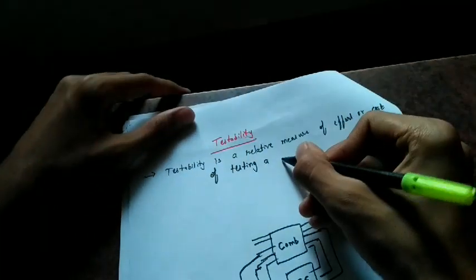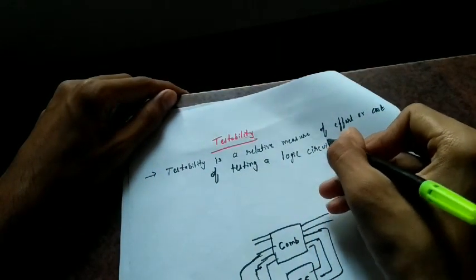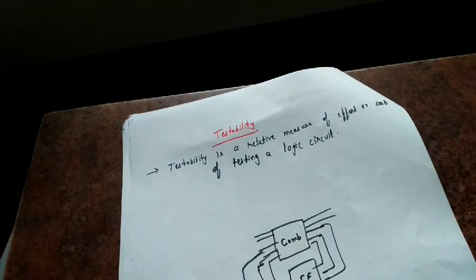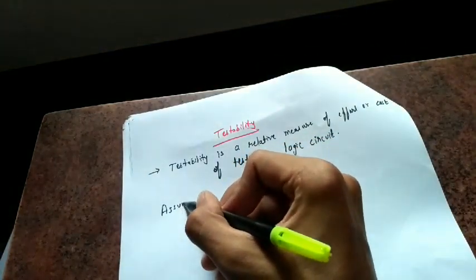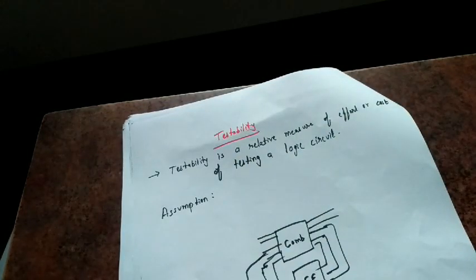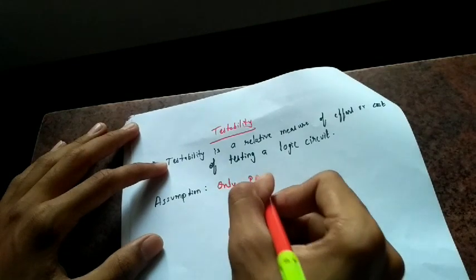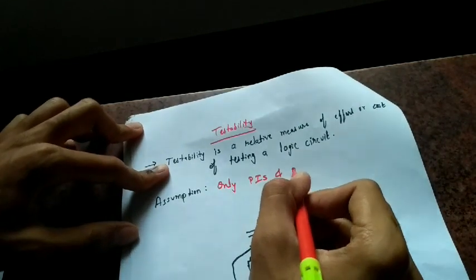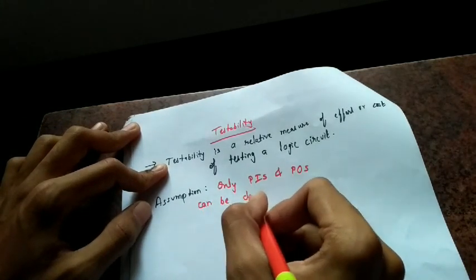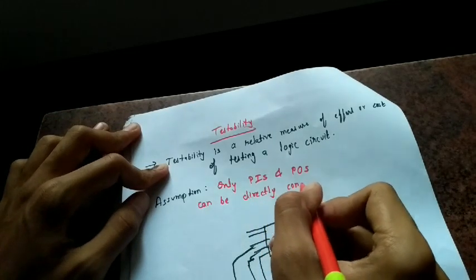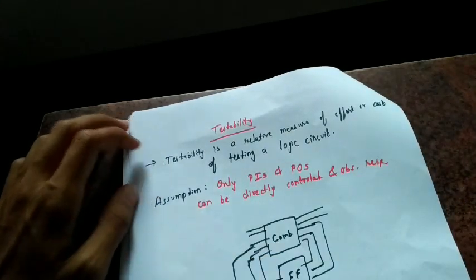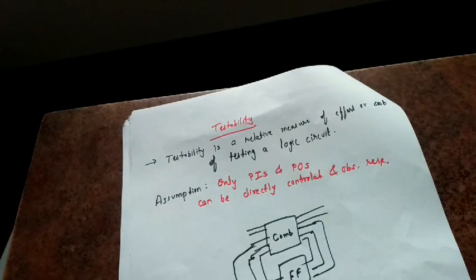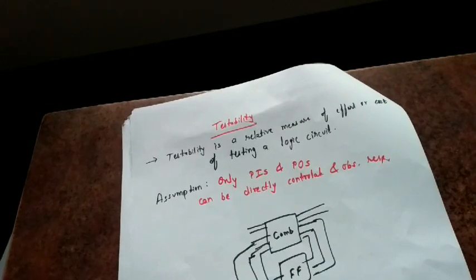Testability is based on one assumption: only primary inputs and primary outputs can be directly controllable and observable, respectively. This is the basic assumption on which testability works.